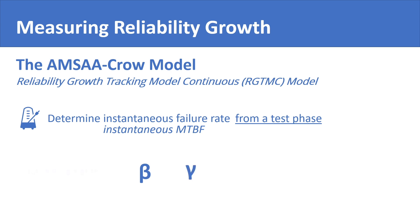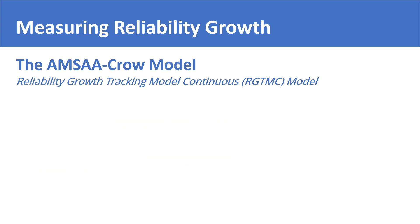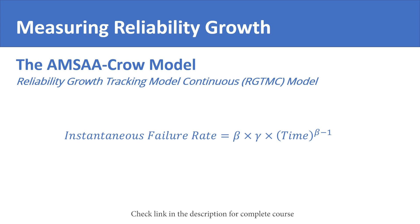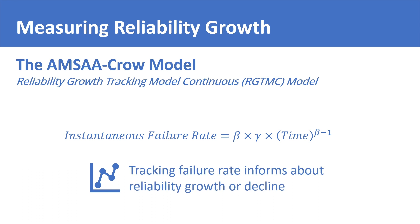Beta and gamma are called shape parameters of the model. They are calculated from the test period and then used outside of the test period to measure the failure rate and mean time between failures at any instant. The equation that the MSA-Crow model uses calculates the instantaneous failure rate at any given time from the shape parameters evaluated from the test phase. By using the MSA-Crow equations in successive time periods, you can see whether the failure rate is increasing or decreasing, thereby knowing whether reliability is growing or not.